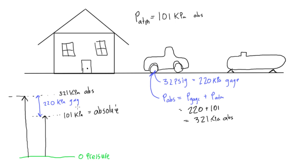So gauge is just the difference from the absolute pressure to whatever pressure we're measuring. And in gauge, if it's positive we call it gauge, and if it's negative we're going to call that vacuum.